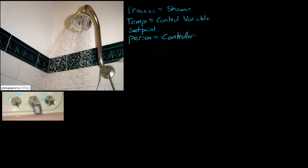Now how do we actually control the system? Well, we use the valve of the cold water. The valve is the actual actuator. It's the actual thing that's changing the system. The person controls the actuator, and the actuator actually affects the process.